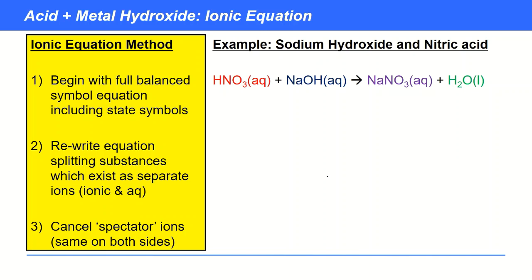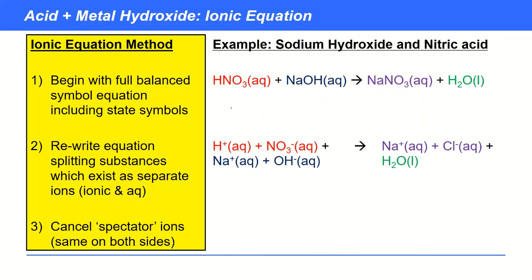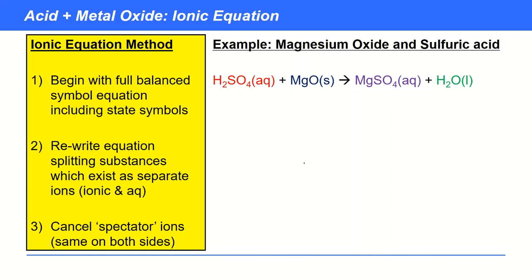Our third example is sodium hydroxide reacting with nitric acid — a metal hydroxide reacting with an acid. Pause the video and try to write the ionic equation. The acid splits into H⁺ and NO₃⁻; the alkali is ionic, aqueous, and splits; sodium nitrate is a soluble salt giving Na⁺ and NO₃⁻. H₂O doesn't split. The fourth example is an acid reacting with a metal oxide — pause the video and try writing the ionic equation.